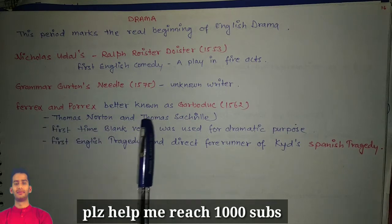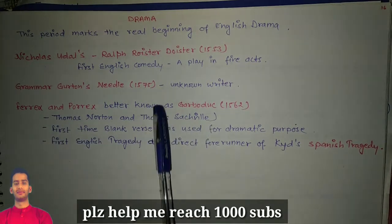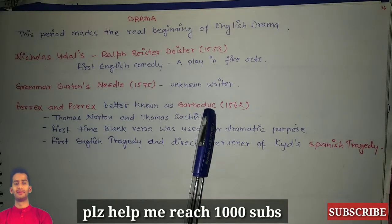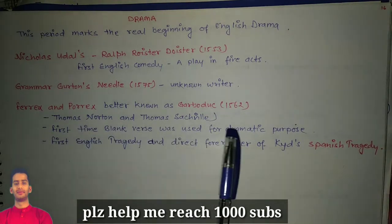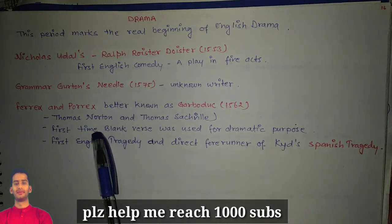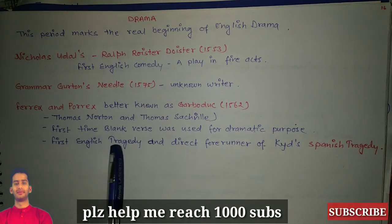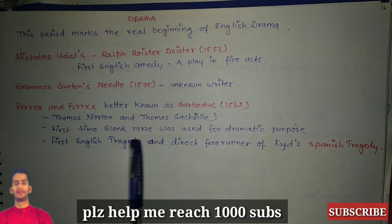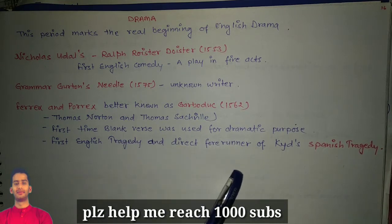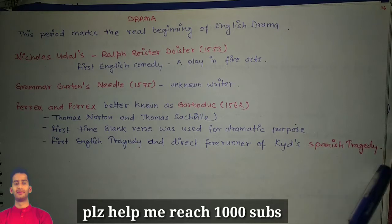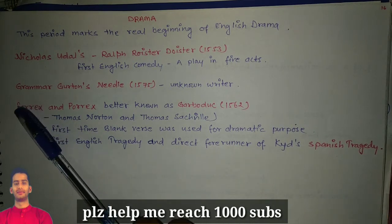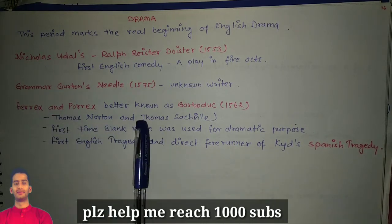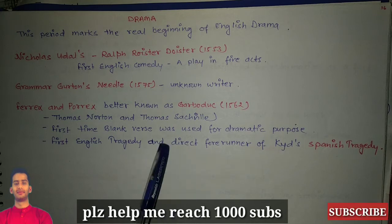Ferrex and Porrex, better known as Gorboduc, written in 1562 by Thomas Norton and Thomas Sackville — this drama is the first time blank verse was used for dramatic purpose. It is the first English tragedy and a direct forerunner of Kyd's Spanish Tragedy. Sometimes people consider Spanish Tragedy the first work, but officially Ferrex and Porrex is the first English tragedy.